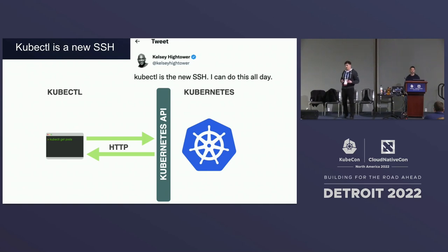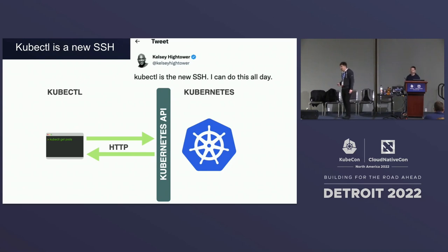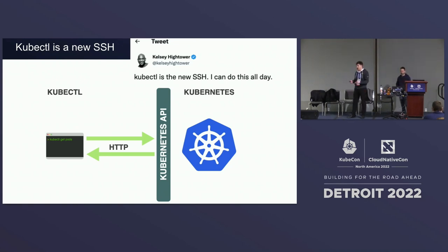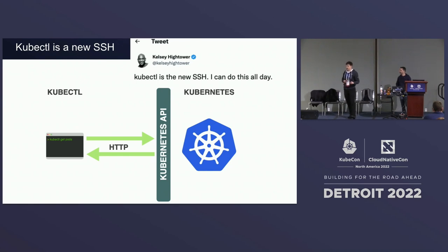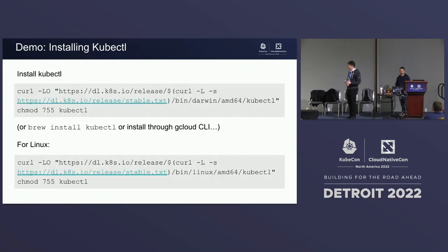kubectl is a CLI that works with and communicates with Kubernetes. Kelsey Hightower says it's the new SSH, and I agree. The idea is that you have kubectl installed on your laptop or maybe on a cloud shell. Through HTTP, you will be able to talk to Kubernetes clusters, provide resources, deploy things, delete things. All communication goes through the Kubernetes API.